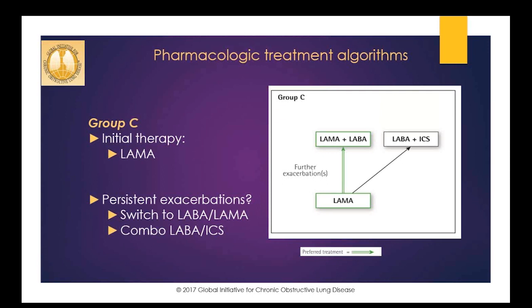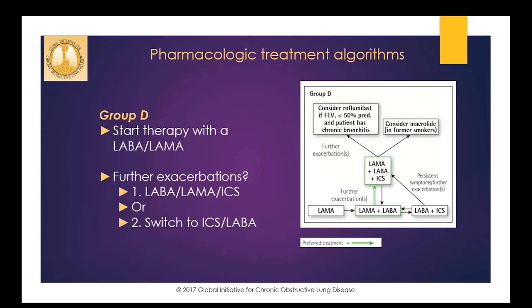If group C patients have persistent exacerbations, they can benefit from adding a second long-acting bronchodilator, moving to a LABA-LAMA combo, or using a LABA-ICS combination. However, ICS can increase the risk for developing pneumonia, so guidelines recommend the LABA-LAMA combo as the primary choice. Available LABA-LAMA combos in the same device include tiotropium/olodaterol (Stiolto Respimat), umeclidinium/vilanterol (Anoro Ellipta), glycopyrrolate/indacaterol (Utibron Neohaler), and glycopyrrolate/formoterol (Bevespi Aerosphere).